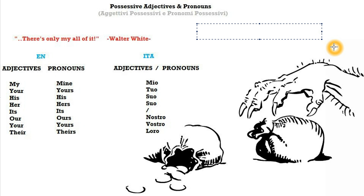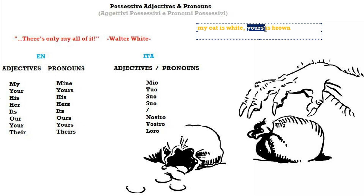In this case, when I say 'my cat is white', we have an adjective, and we need to use the adjective because there's a noun along with it. But then we can say 'yours is brown', so whenever you don't have the noun going along with it, then it can't be an adjective, because adjectives are always together with a noun.